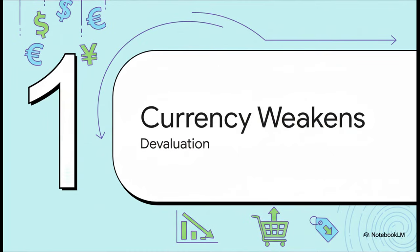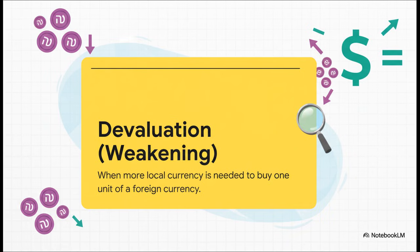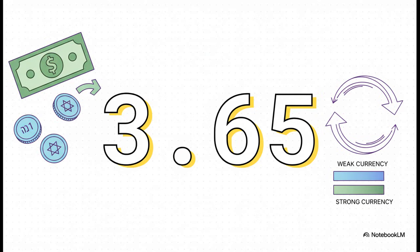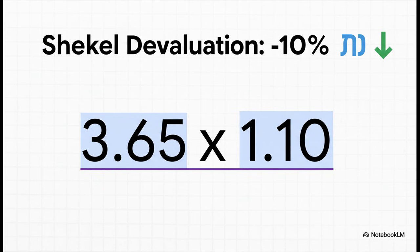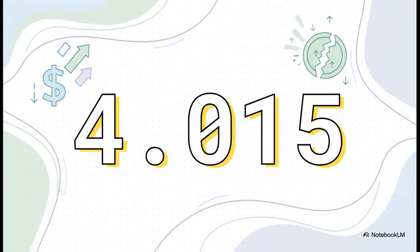Let's put this idea into action by looking at what happens when a local currency gets weaker. The fancy economic term for this is devaluation. Devaluation is when the price tag on foreign money goes up — you have to hand over more of your local cash, in this case more shekels, to get that same US dollar. Starting from our base rate of 3.65, if the shekel devalues by 10%, we multiply 3.65 by 1.10 and get a new number: 4.015. That same US dollar now costs more shekels to buy.